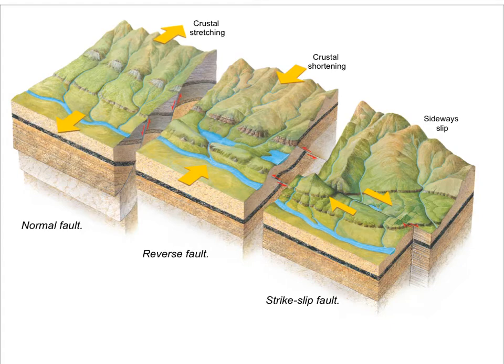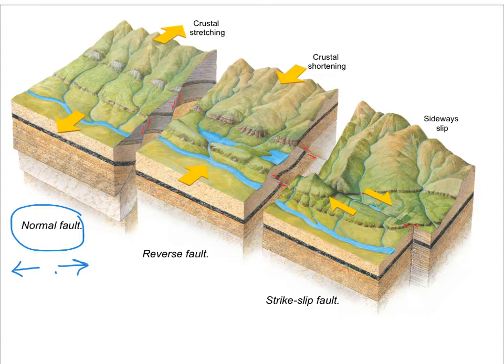We left off in class last week talking about the three major types of faults that can occur in planet Earth. You can have normal faults. Normal faults develop when the crust is being put under extension or being pulled apart. And when you pull apart the crust, you can produce a sloping fault in which the hanging wall moves down relative to the foot wall.